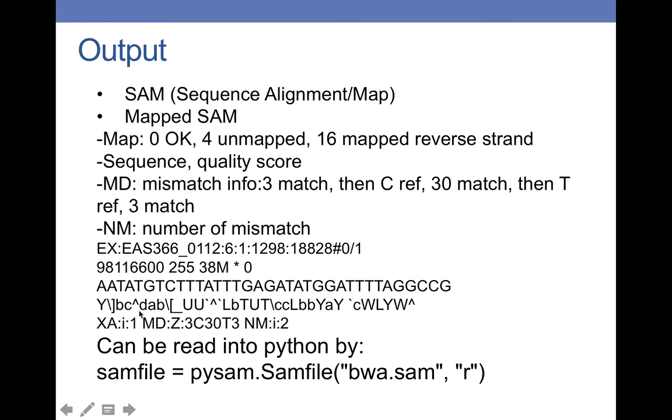And 4 means unmapped. 16 means it mapped to the reverse strand, which is also good. Followed by the reads and its quality score. XA is a mapper-specific tag. And the mismatch information: from this sequence we can see there are three matches and a T in our sequence while a C in the reference sequence, followed by 30 matches, a G in our sequence and a T in the reference sequence. And the number of mismatches, which is two in our sequence here. And one thing nice about it is the SAM file can be read by the pysam file function in Python.